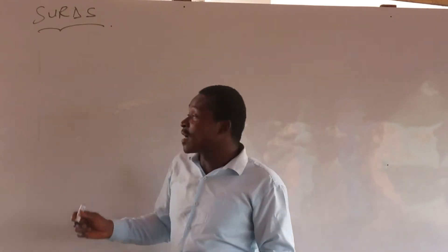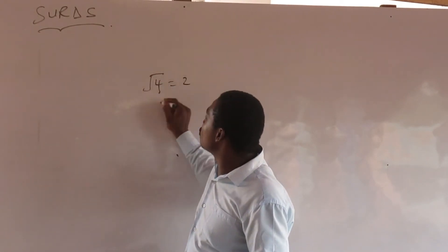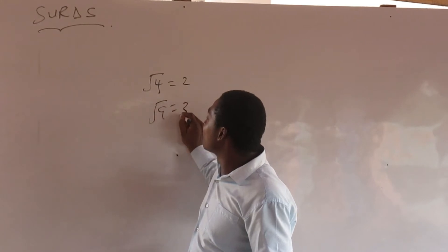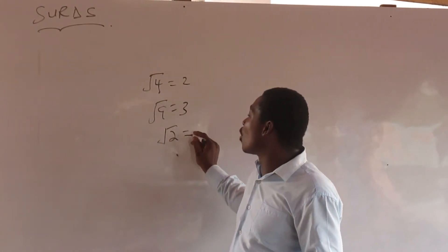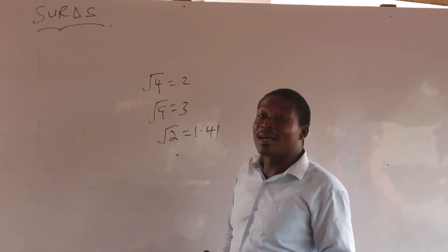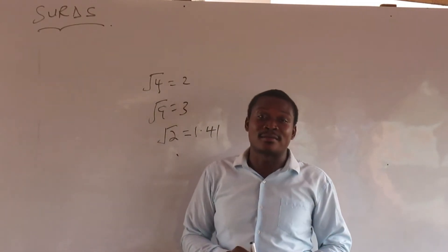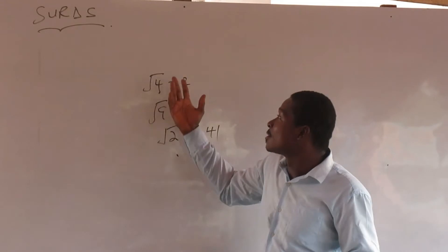We know that sometimes you have roots of numbers. Now there are some numbers whose roots cannot be obtained exactly. That is what we refer to as surds. Welcome to surds. So let's start.